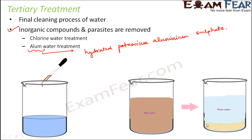These lumps can then be easily removed with the help of filters. All the muddy particles — which also contained inorganic compounds like phosphorus — come together and form lump-like structures, which can then be very easily removed by filtration. That's how alum can be used for tertiary treatment of water, and this is called alum water treatment.